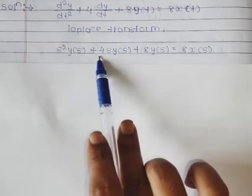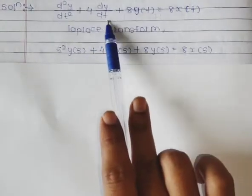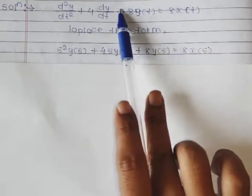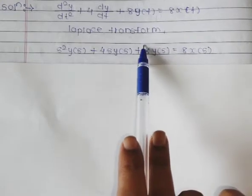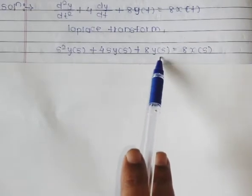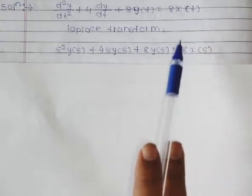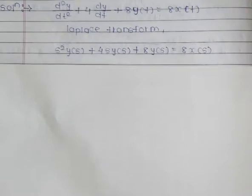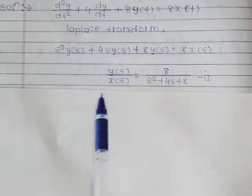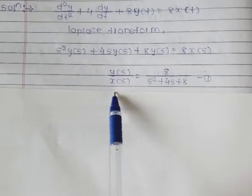Plus 4 is a constant, so it stays the same. dy/dt becomes sY(s). Plus 8 is also a constant, so keep it as is. y(t) in Laplace transform is written as Y(s), 8 is constant, and x(t) is written as X(s). After that, we arrange this equation in the form Y(s)/X(s).